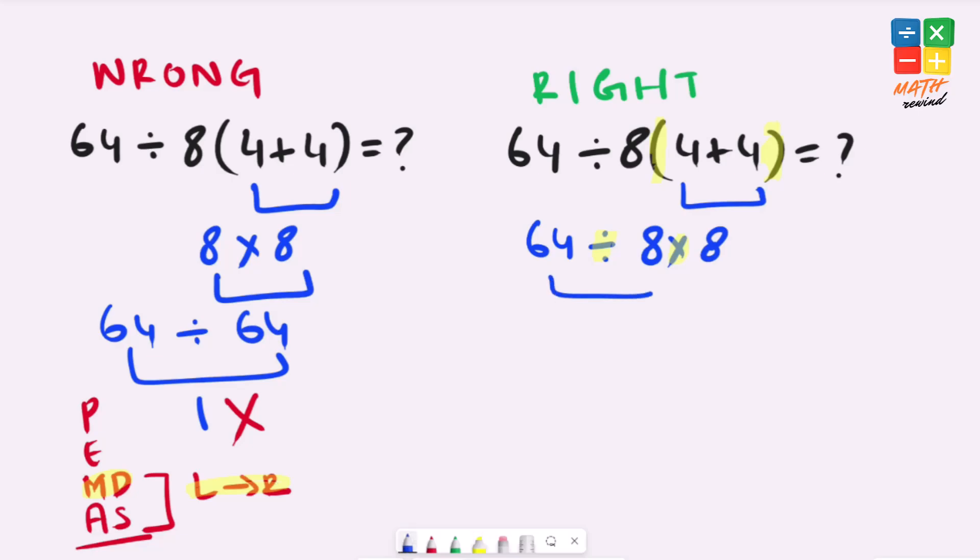So let's solve left side first. 64 divided by 8 gives us 8 and 8 times 8 gives us 64 which is the right answer to this problem.